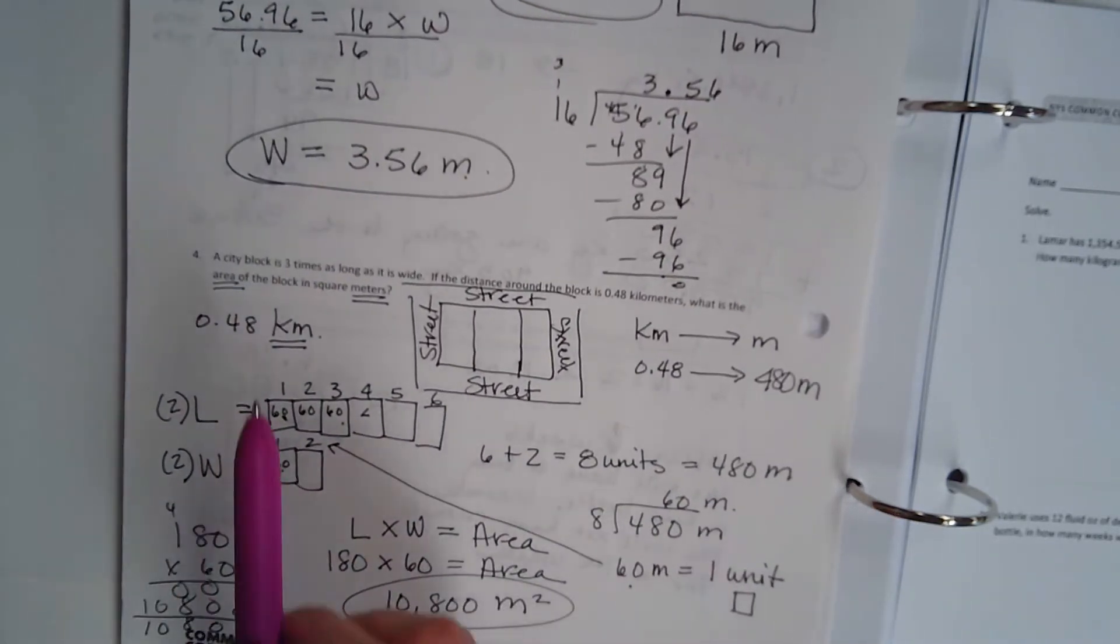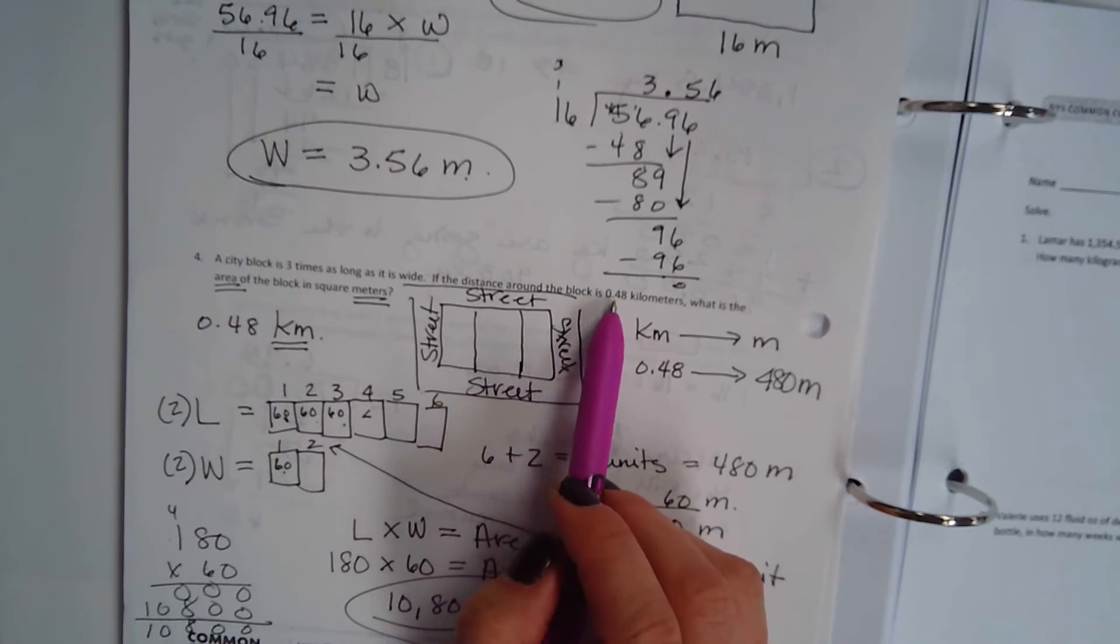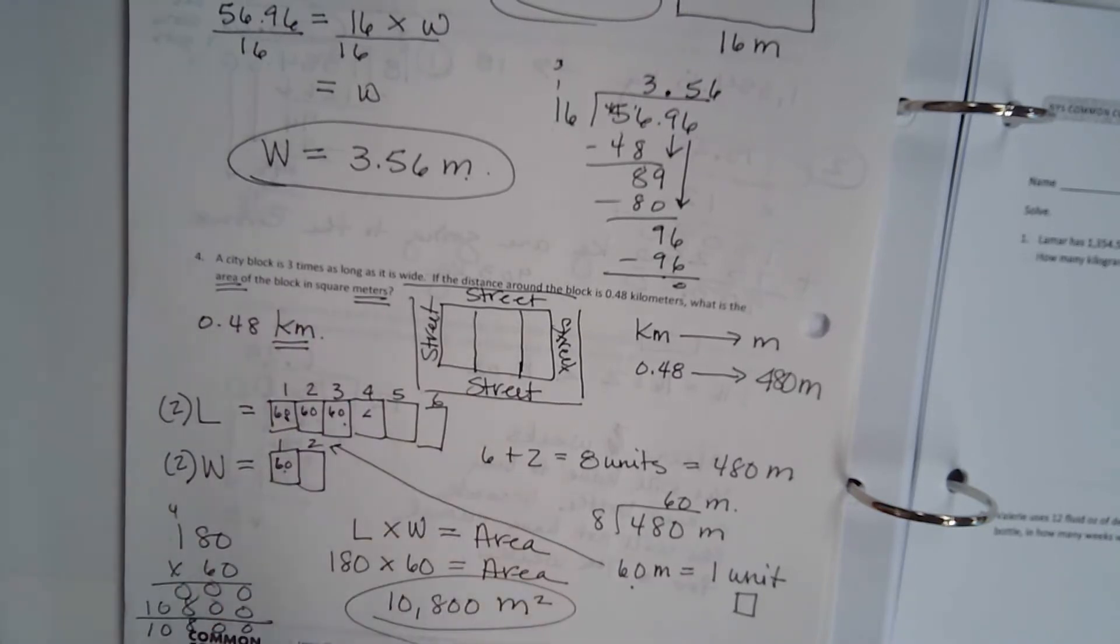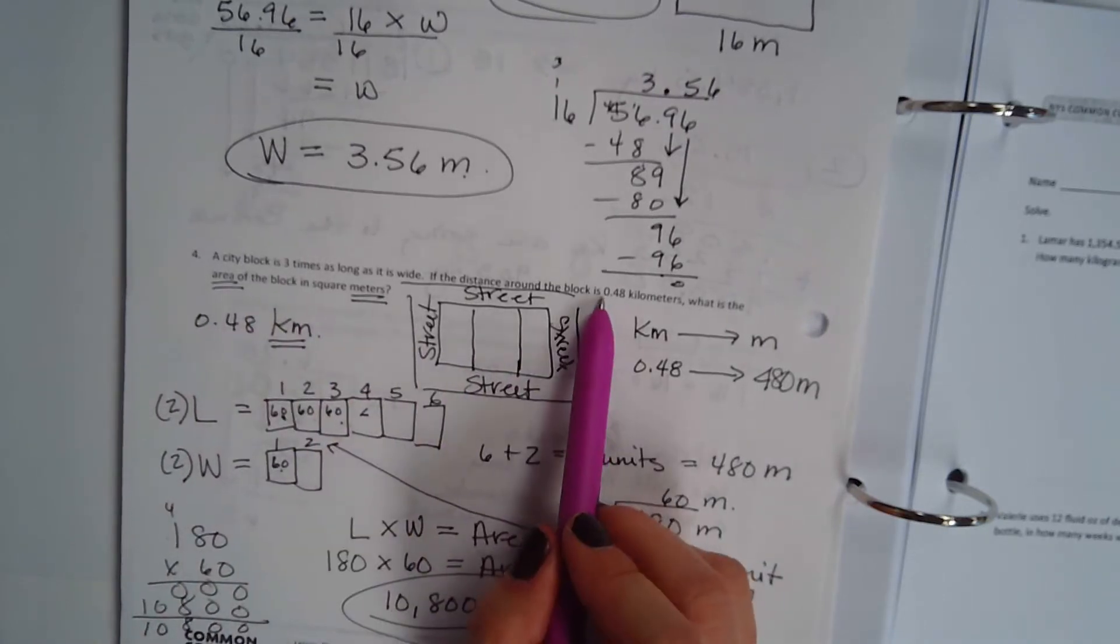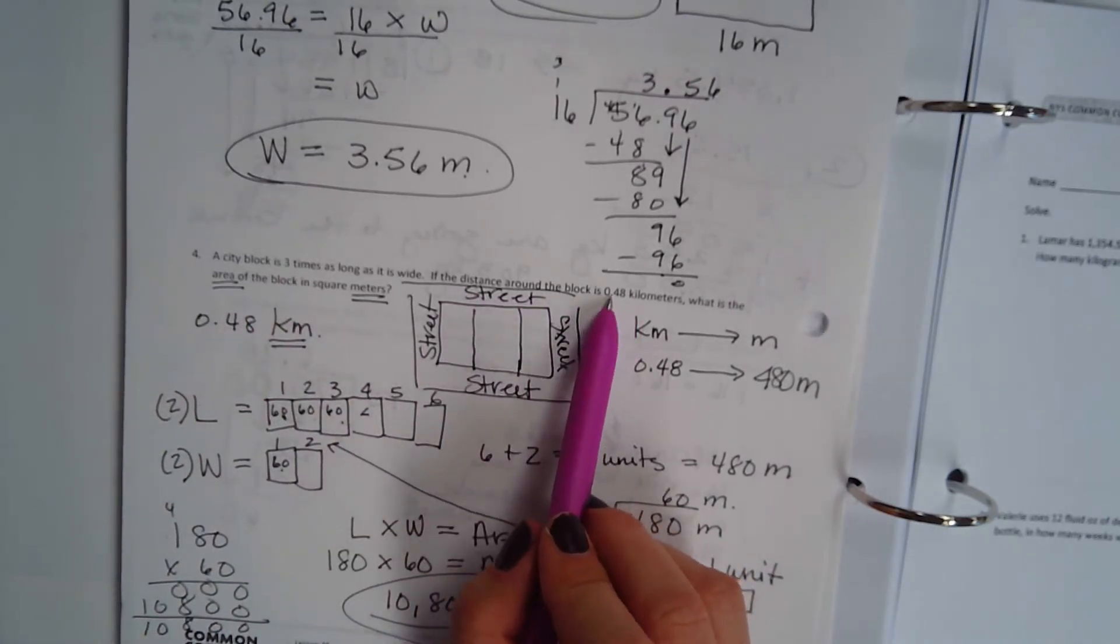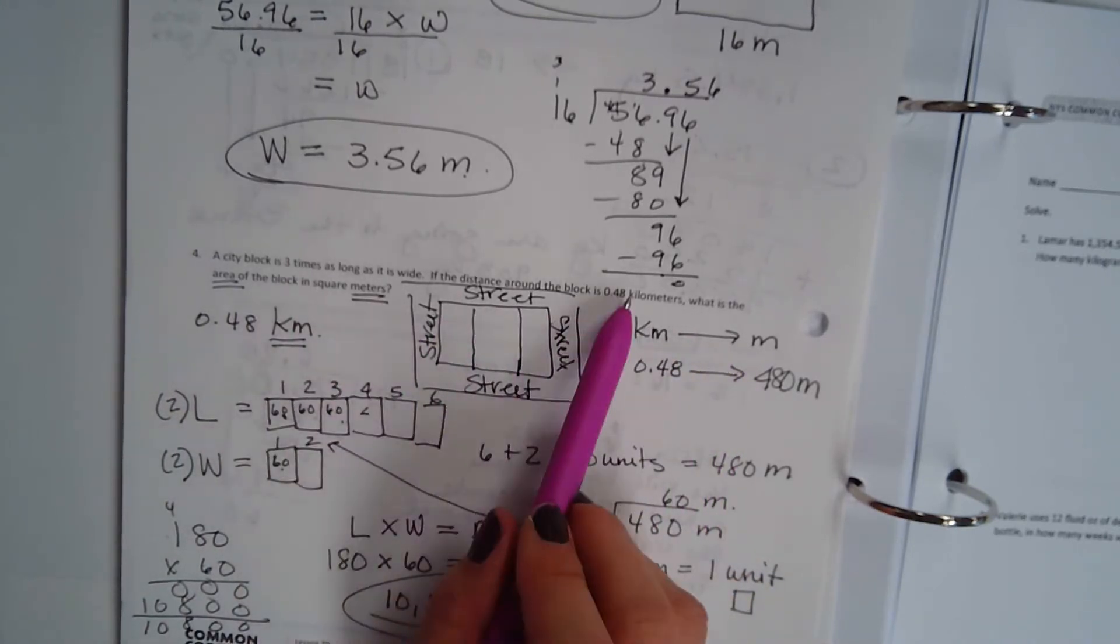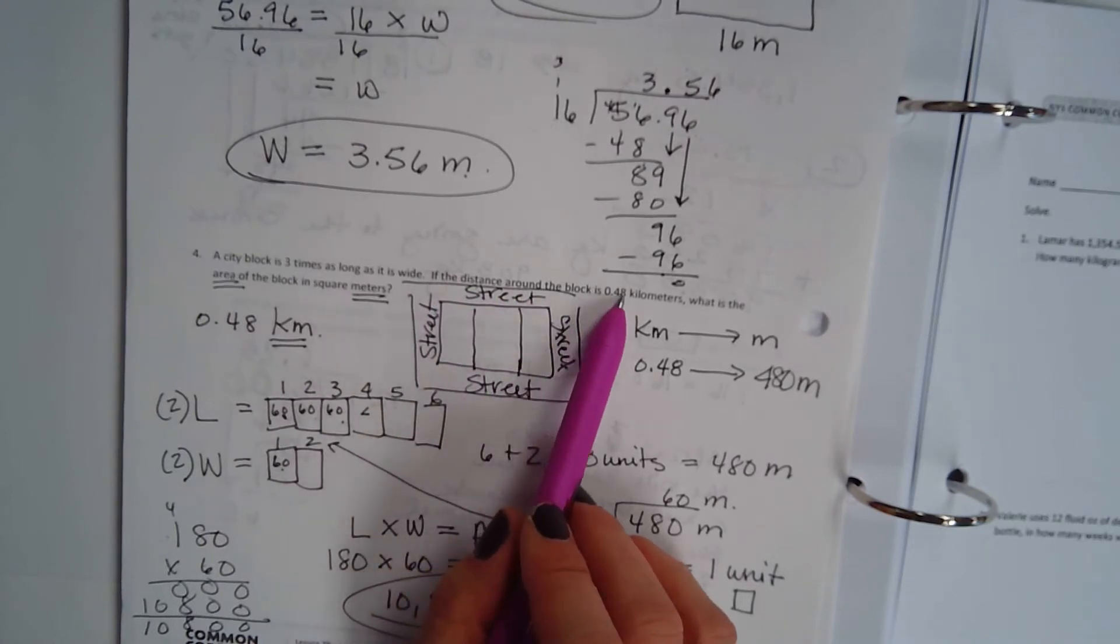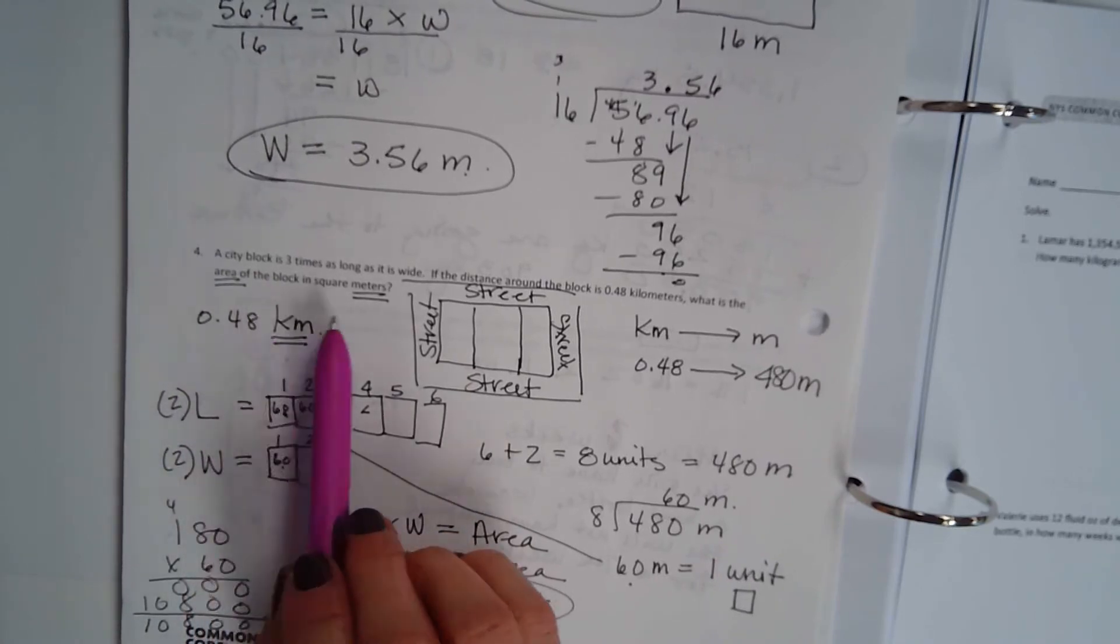Problem 4. A city block is 3 times as long as it is wide. If the distance around the block is 0.48 kilometers, what is the area of the block in square meters? So this problem is definitely more advanced. We know if the distance around the block is 0.48 kilometers, which is less than a kilometer, we have to change our kilometers into meters as well.